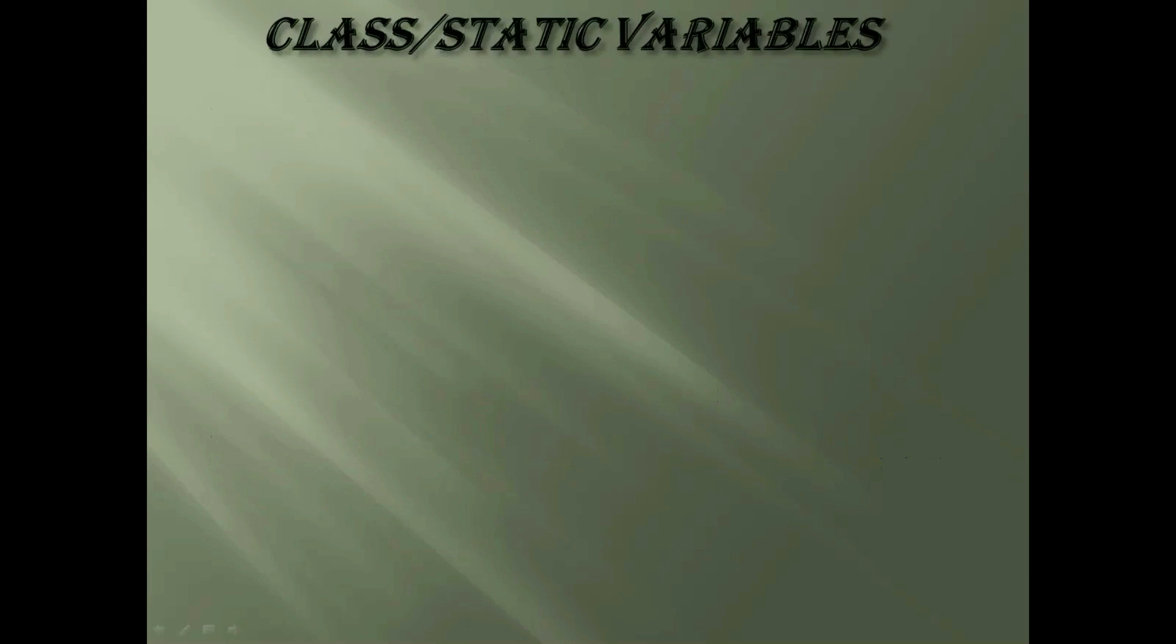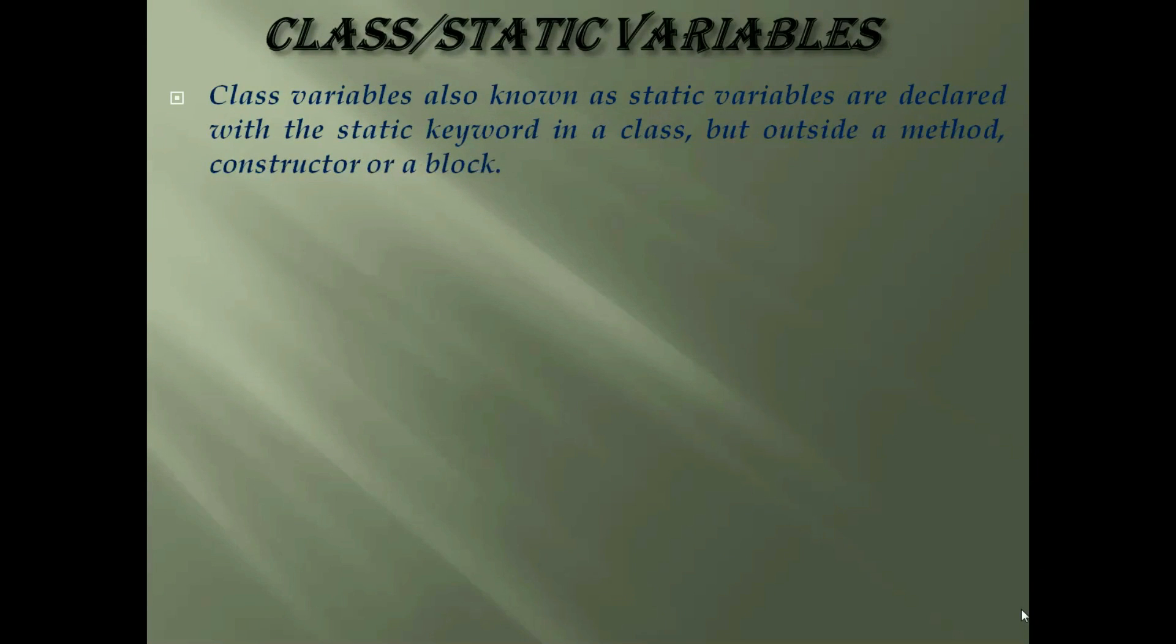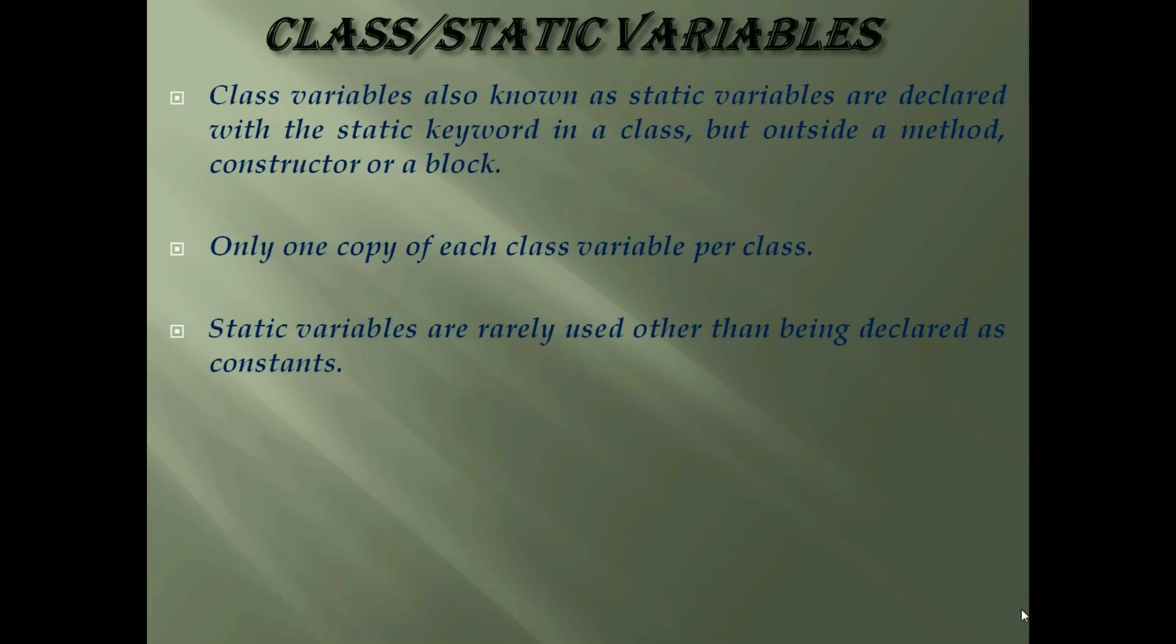Third kind of variable is class static variables. Class variables also known as static variables are declared with the static keyword in a class, but outside a method, constructor or a block. There would be only one copy of each class variable per class regardless of how many objects are created from it. Static variables are rarely used other than being declared as constants. Constants are variables that are declared as public-private, final and static. Constant variables never change from their initial value. Static variables are stored in the static memory.